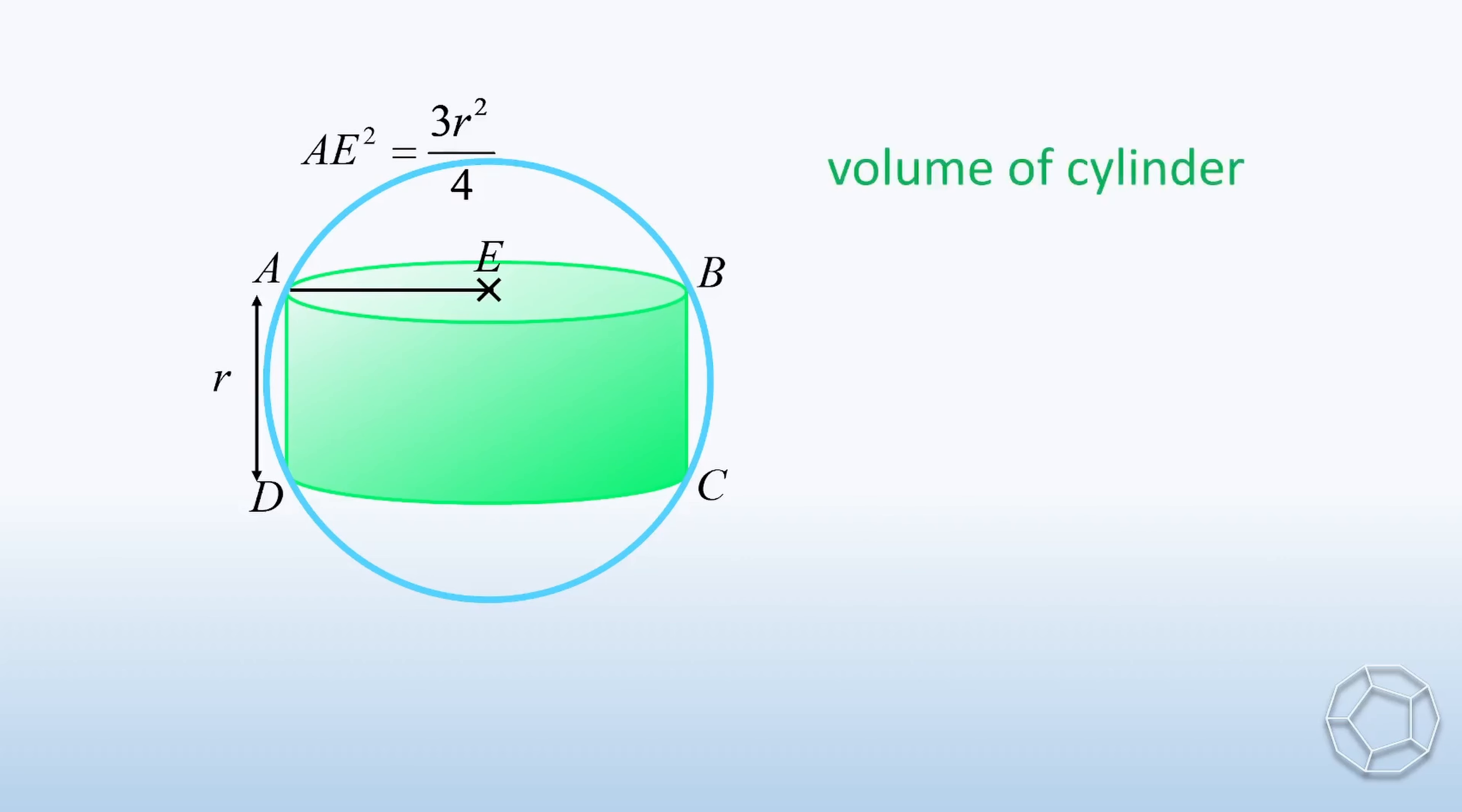Now the volume of the cylinder, V1 is equal to pi times radius AE square times the height AD. We substitute AE square equals 3r square over 4, and AD equals r. Then the volume is equal to 3 over 4 pi r cubed.